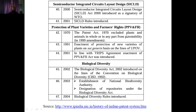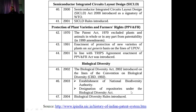Regarding PPB and PFR, especially for farmers: in 1970, plants and animals were excluded from patentability. In 2001, in line with the TRIPS agreement, the Protection of Plant Varieties and Farmers' Rights (PPB & WRFR) Act was enacted. Regarding Biological Diversity: in 2002, the Biological Diversity Act was introduced. In 2003, the National Biodiversity Authority was established and biodiversity repositories were designated. In 2004, the Biological Diversity Rules were introduced.